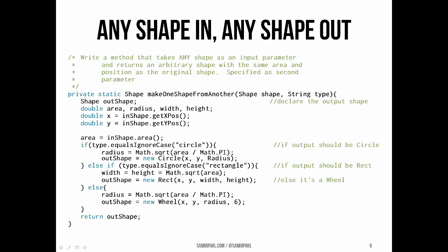Now we'll tackle a slightly more complex task: writing a method that returns an arbitrary rather than a specific shape. This method takes two input parameters. The first is a shape itself, and the second tells us what kind of shape we want to return — for instance, circle, rectangle, or wheel. We start by declaring a shape variable that will ultimately point at the output shape, and declare variables for area, radius, width, and height. We'll definitely need area, but the others depend on what type of shape we're trying to produce.